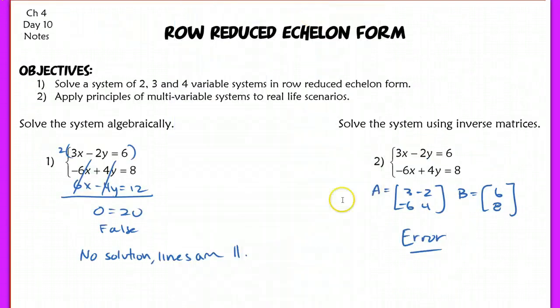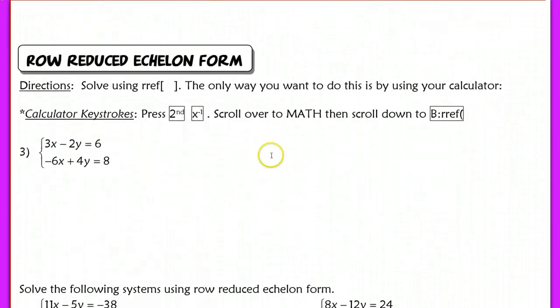That's why today we're going to use something different using our calculator. We're going to use row reduced echelon form.